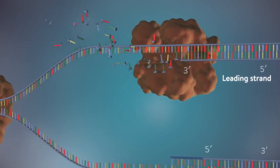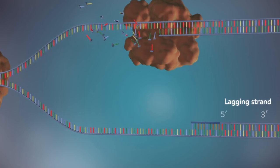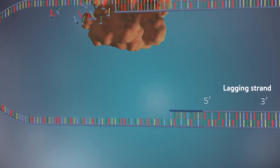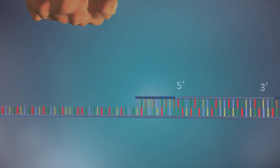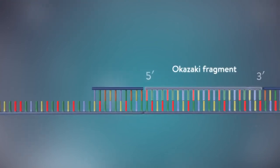The other strand, the lagging strand, cannot be made in this continuous way because it runs in the opposite direction. The DNA polymerase can therefore only make this strand in a series of small chunks called Okazaki fragments.